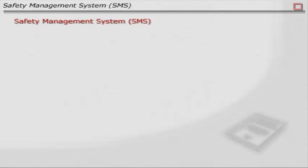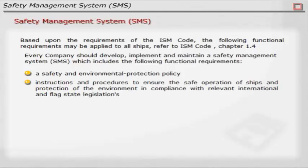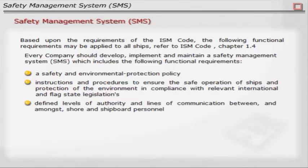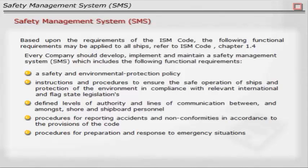Safety Management System (SMS): Based upon the requirements of the ISM Code, the following functional requirements may be applied to all ships (refer to ISM Code Chapter 1.4). Every company should develop, implement and maintain a Safety Management System which includes: a safety and environmental protection policy; instructions and procedures to ensure the safe operation of ships and protection of the environment in compliance with relevant international and flag state legislation; defined levels of authority and lines of communication between shore and shipboard personnel; procedures for reporting accidents and non-conformities; procedures for preparation and response to emergency situations; and procedures for internal audits and management reviews.